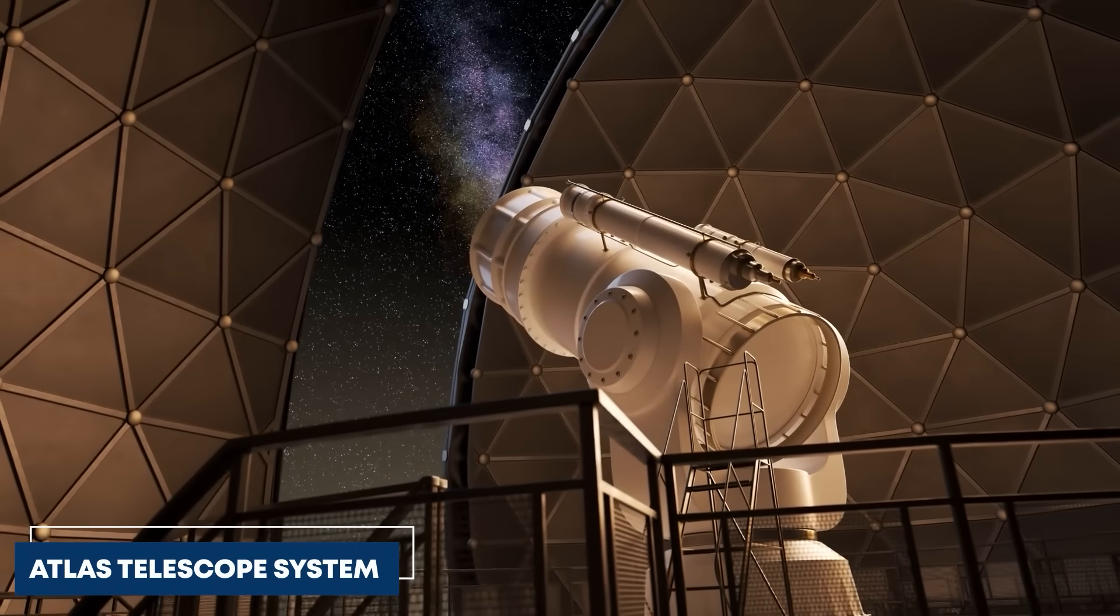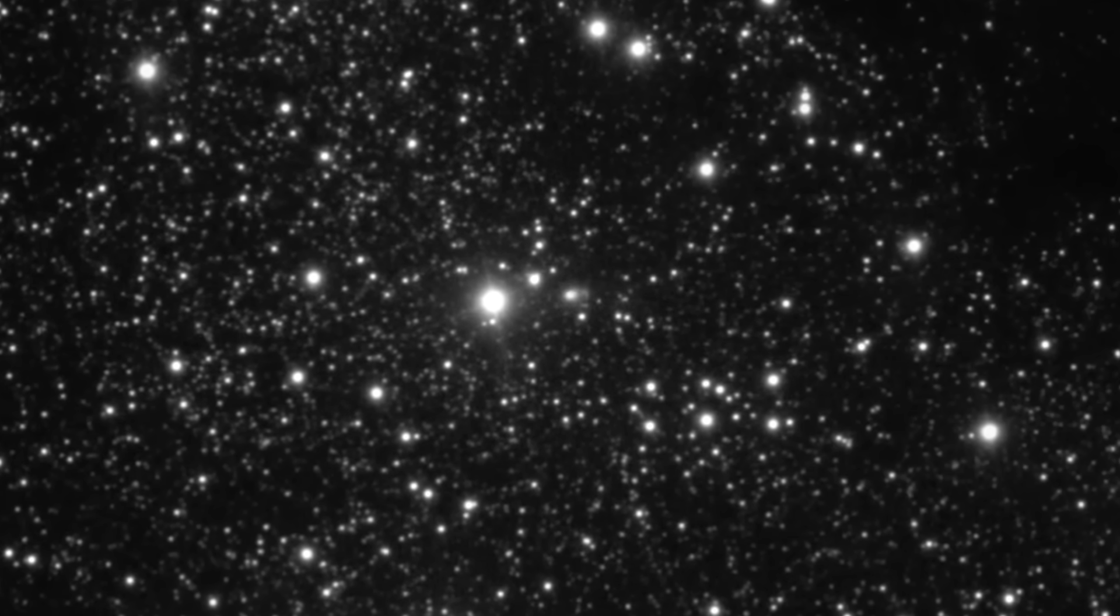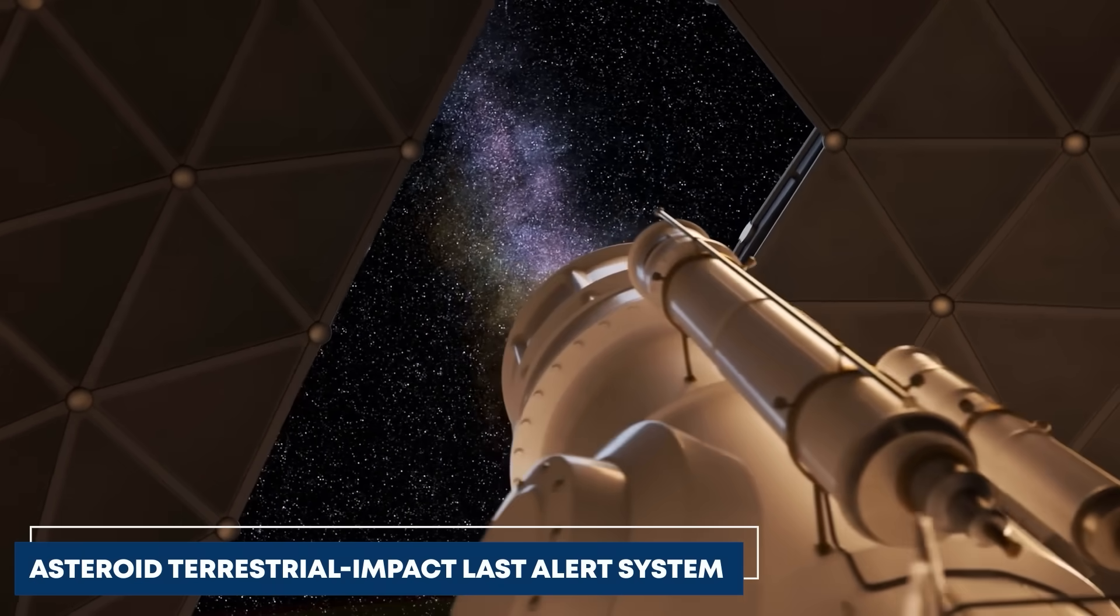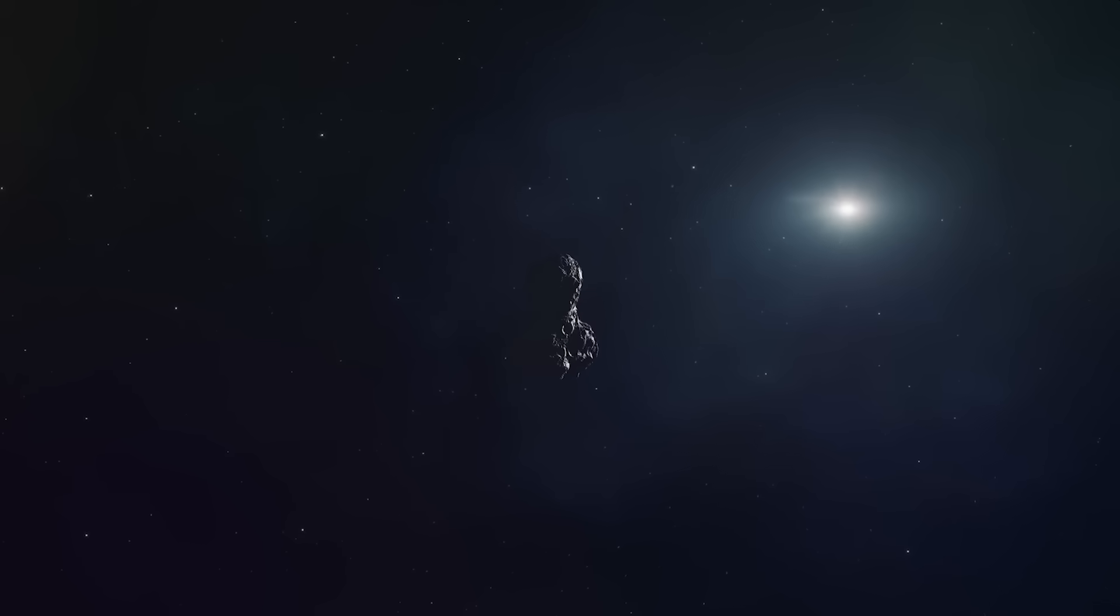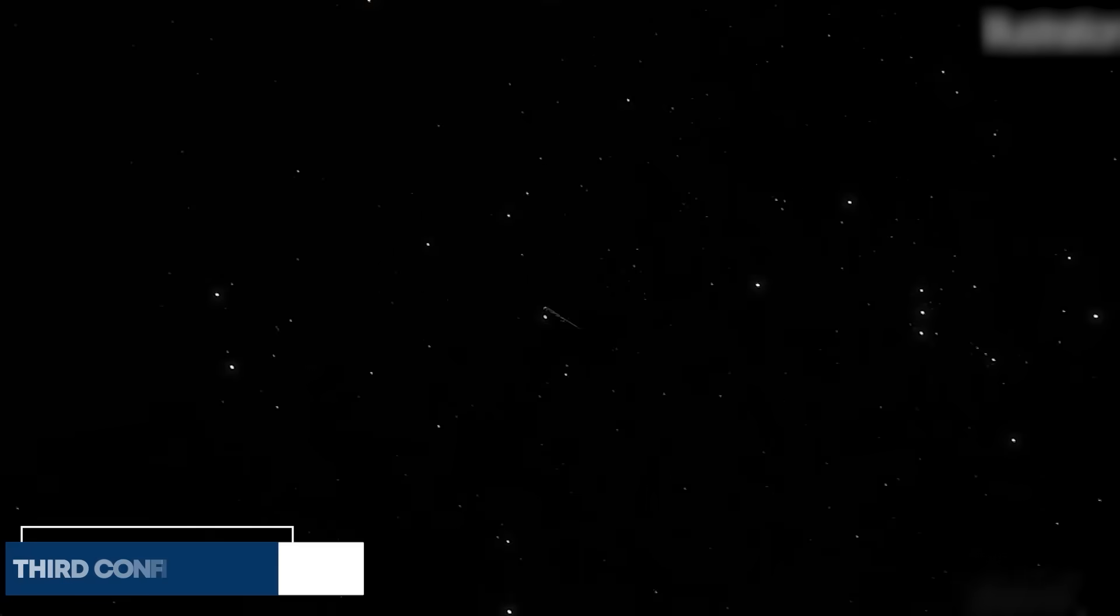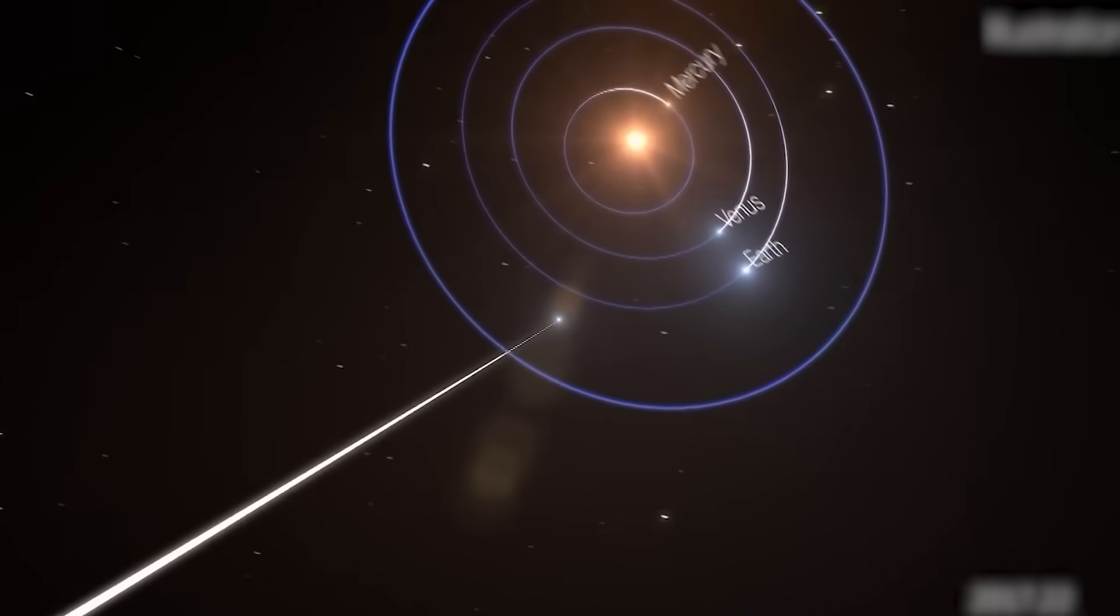The Atlas telescope system in Chile wasn't looking for visitors from other star systems when it made this discovery. Atlas, short for Asteroid Terrestrial Impact Last Alert System, was designed to hunt for dangerous asteroids that might threaten Earth. But on that July night, it captured something unprecedented. Only the third confirmed interstellar object ever detected entering our solar system.